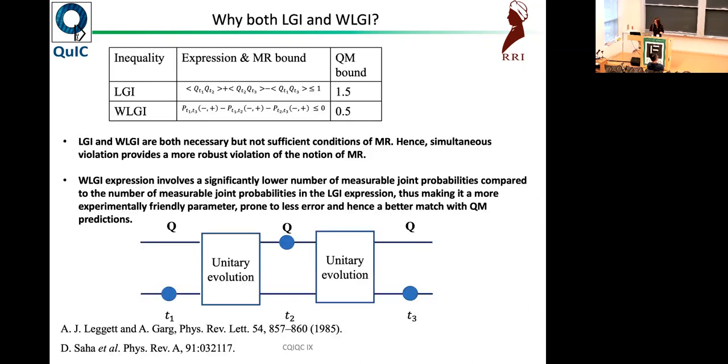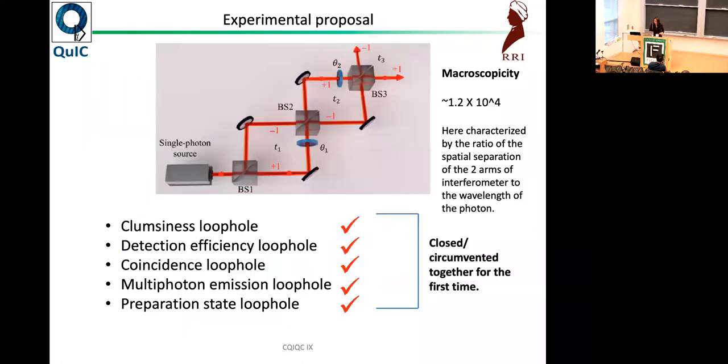We have done both LGI and WLGI. These are the inequalities. The first one consists of these joint measurements in times T1, T2, T2, T3, and T1, T3. It's two time correlation functions. It's less than equal to one for LGI. The quantum mechanical bound is 1.5. WLGI likewise. We did both. Why? Because both of them are necessary but not sufficient conditions for macro realism. So we did both so that it's stronger. Secondly, as experimentalists, WLGI has less parameters to measure. It's less number of joint probabilities, so less error. That was the idea behind doing both.